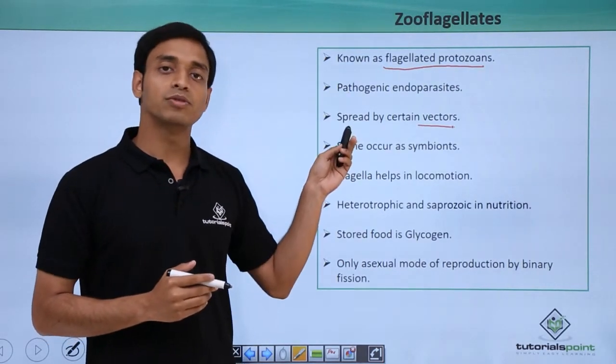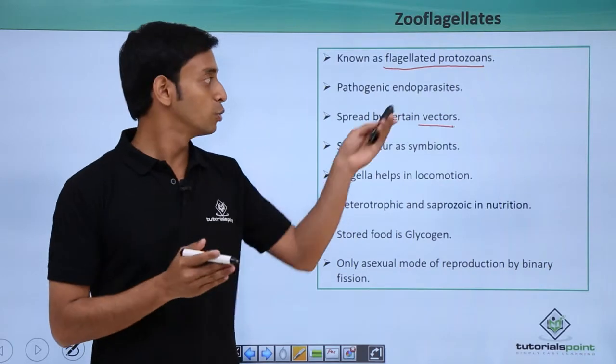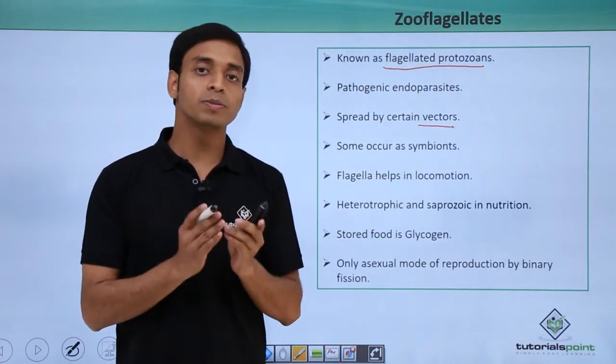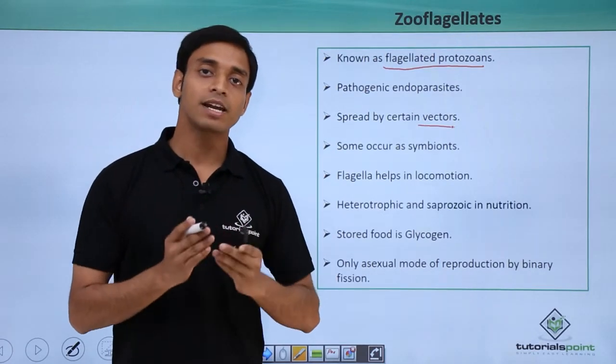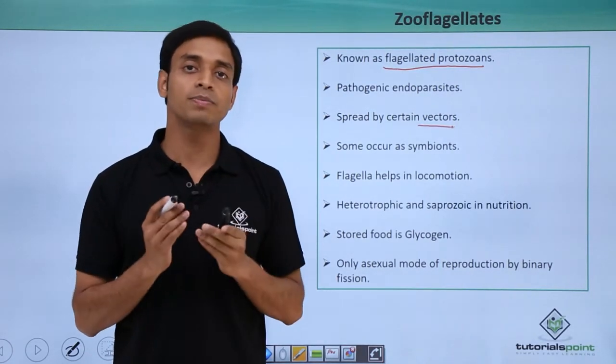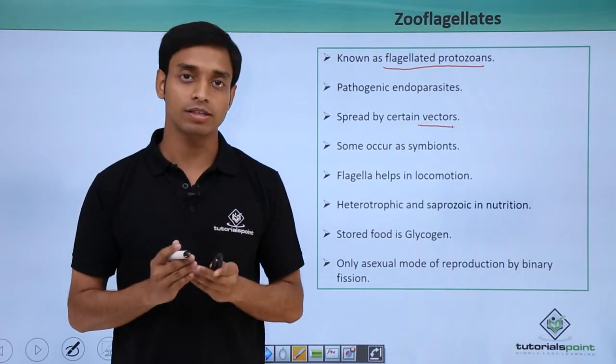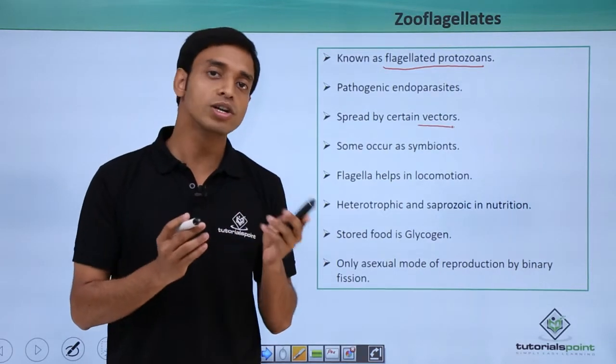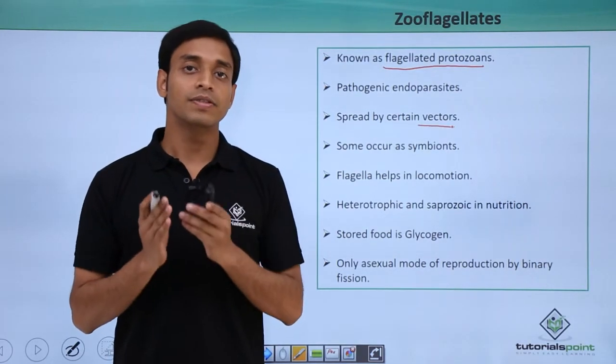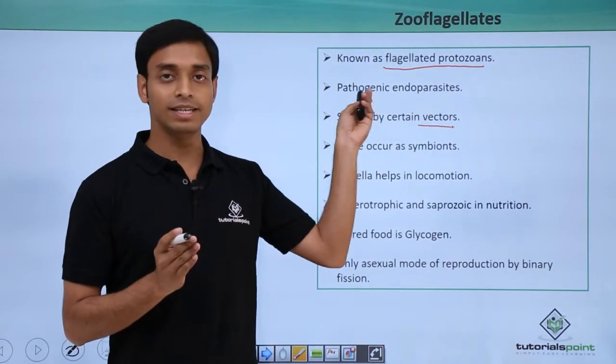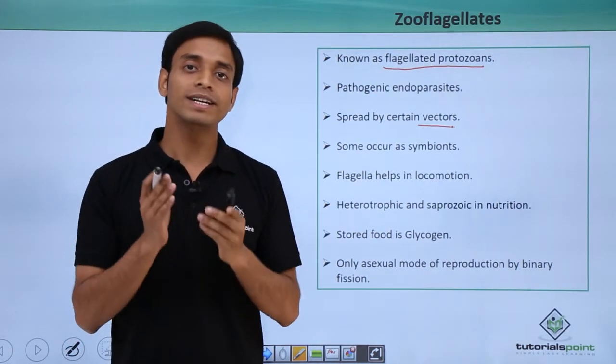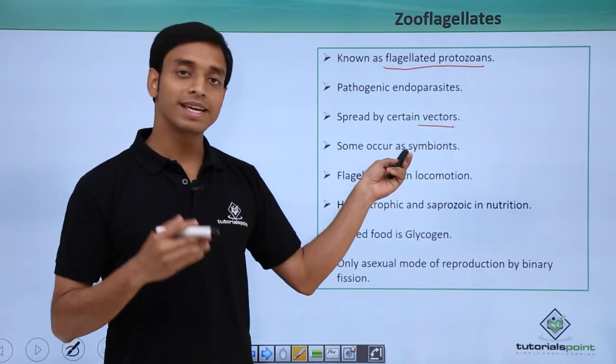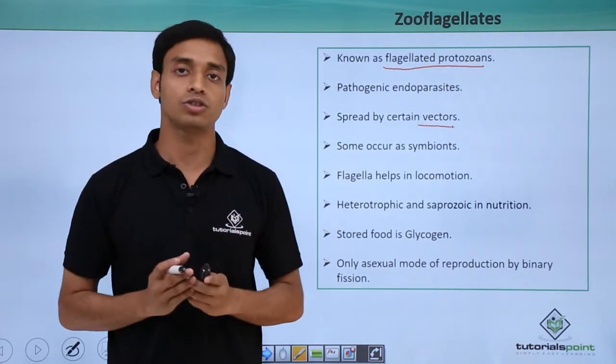Some of these zooflagellates, in addition to being parasites or endoparasites, can act as symbionts. What do we mean by symbionts? They can be in a mutual relationship with other organisms. That means they are dependent on other organisms for their survival or nutrition, but in turn they are not pathogenic. Unlike parasites, they do not harm the host. In turn, they may also be beneficial to the host. So they can live as symbionts or in a mutual relationship.